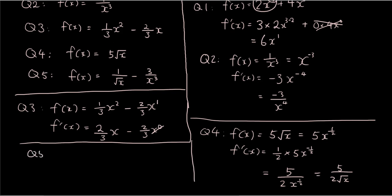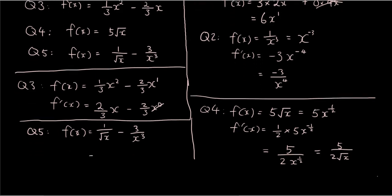Let's do question 5. f(x) equals 1 over square root of x minus 3 over x to the power of 3. So the first thing we want to do is change all of this to move the denominators to the numerator position.